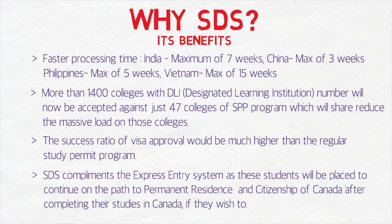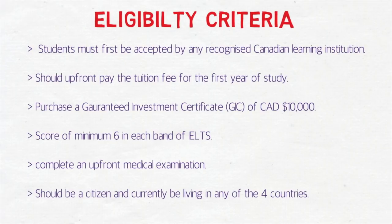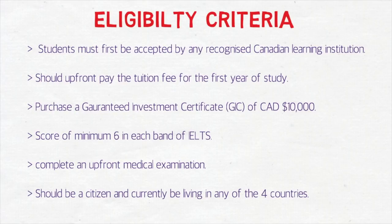Now let's talk about the eligibility criteria. Students must first be accepted by any recognized Canadian learning institution that has a DLI number. You should pay the tuition fee upfront for the first full year of study. You should also purchase a GIC — Guaranteed Investment Certificate — of ten thousand Canadian dollars.